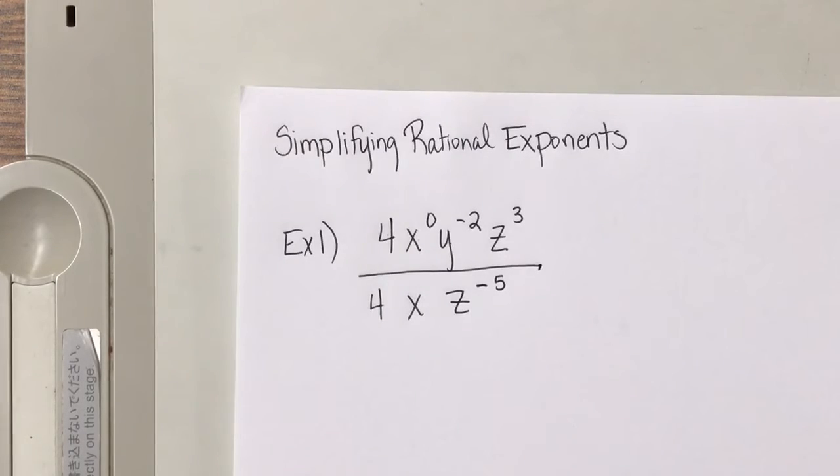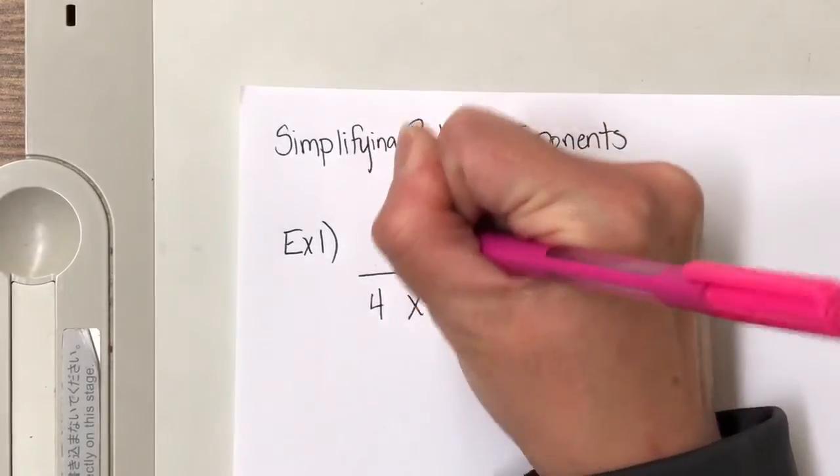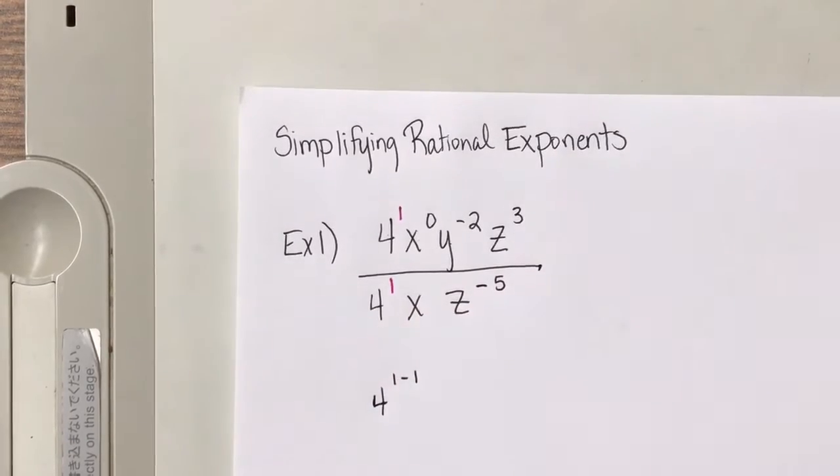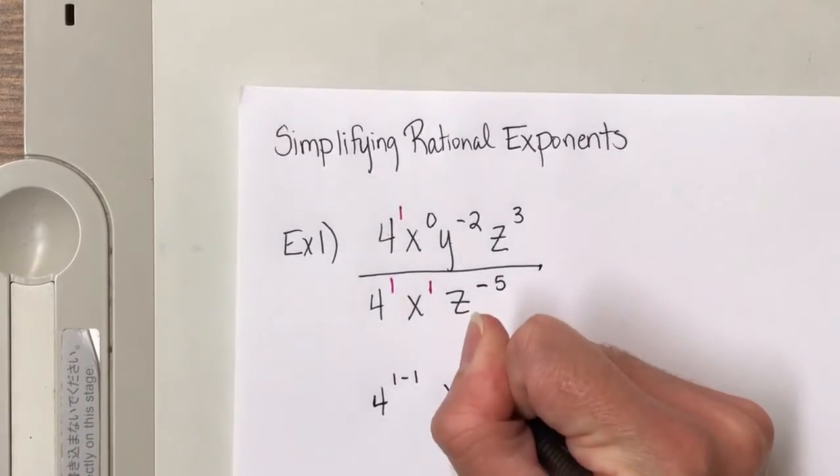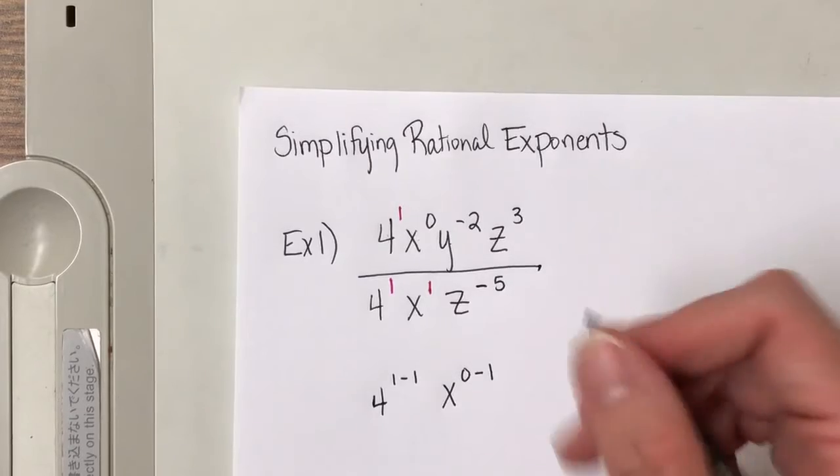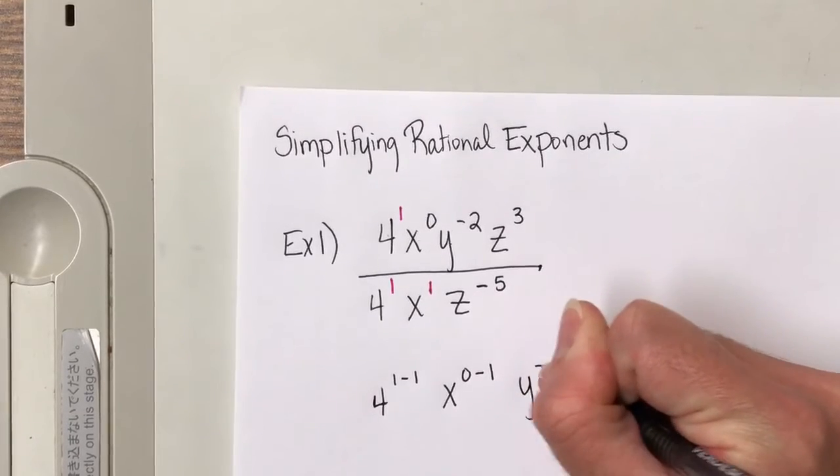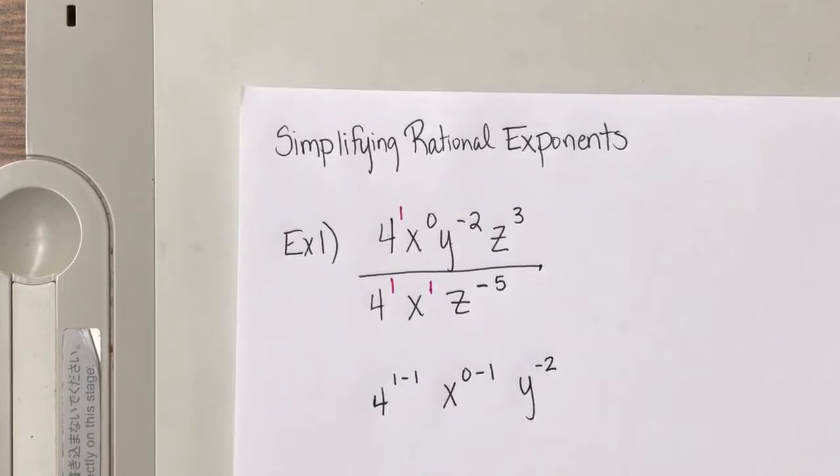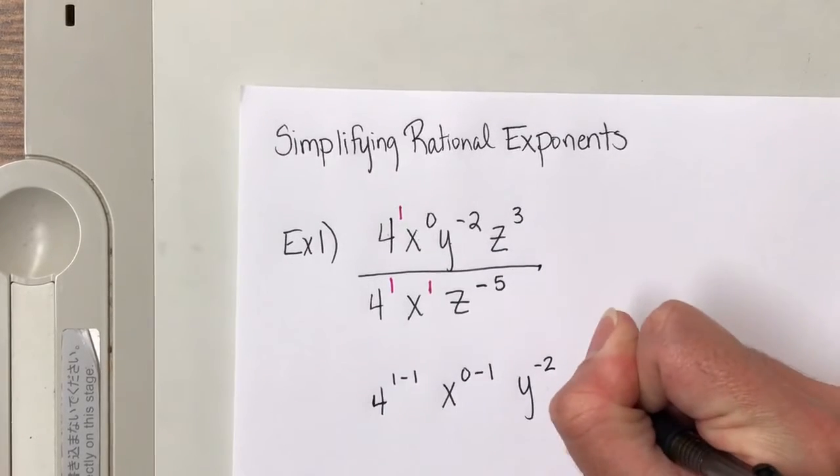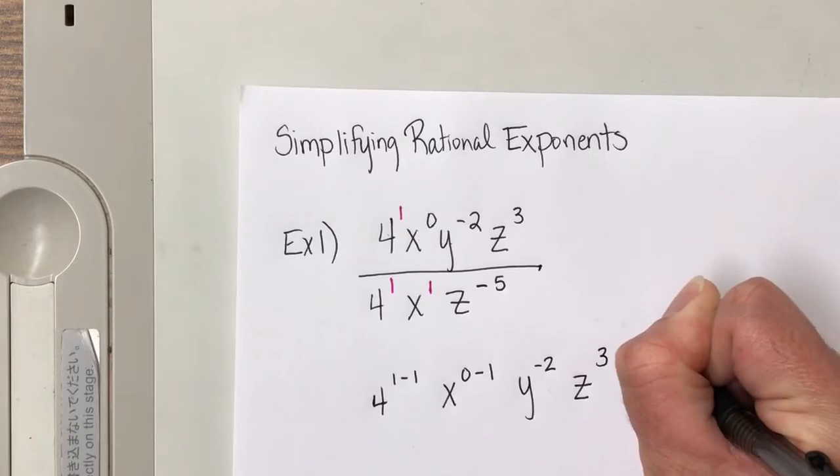If I want to, I can put an exponent here with a 4 and here with a 4. So this becomes 4 to the 1 minus 1. So this one, x to the 0, here is a power of 1, so x to the 0 minus 1. And y to the negative 2, I don't have anything below it, so I'm going to write it down. Now with my z's, notice how this exponent is negative. You want to make sure you do top minus bottom, so z to the 3 minus negative 5.